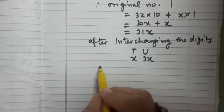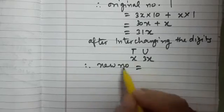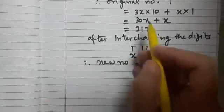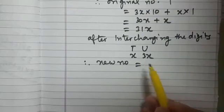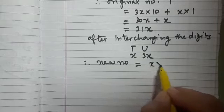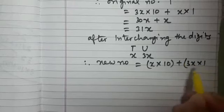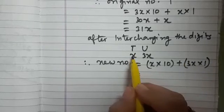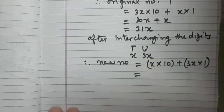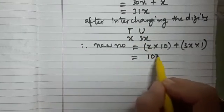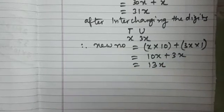Now tell me what will be the new number? Like we expressed it here, now we have to express this new number. Yes, this will be equal to x into 10 plus 3x into 1. So we multiply the tens digit by 10 and units digit by 1 and then we add. So this gives us 10x plus 3x which is equal to 13x. Right?